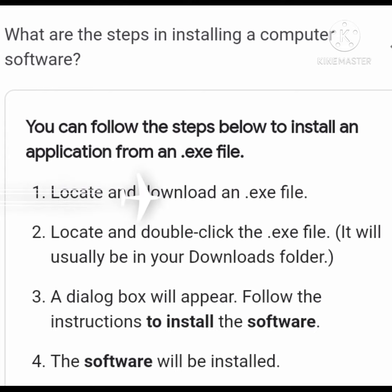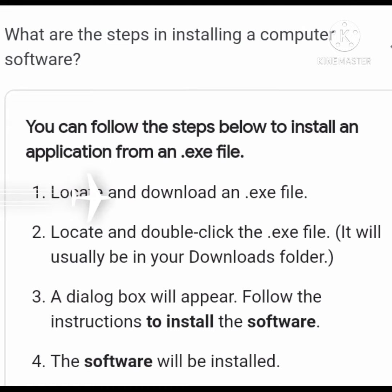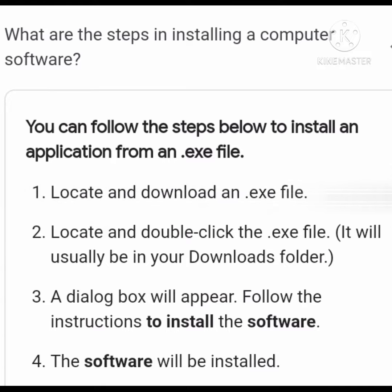What are the steps in installing a computer software? You can follow these steps below to install an application from an .exe file. 1. Locate and download an .exe file. 2. Locate and double-click the .exe file — it will usually be in your downloads folder. 3. A dialog box will appear. Follow the instructions to install the software. 4. The software will be installed.